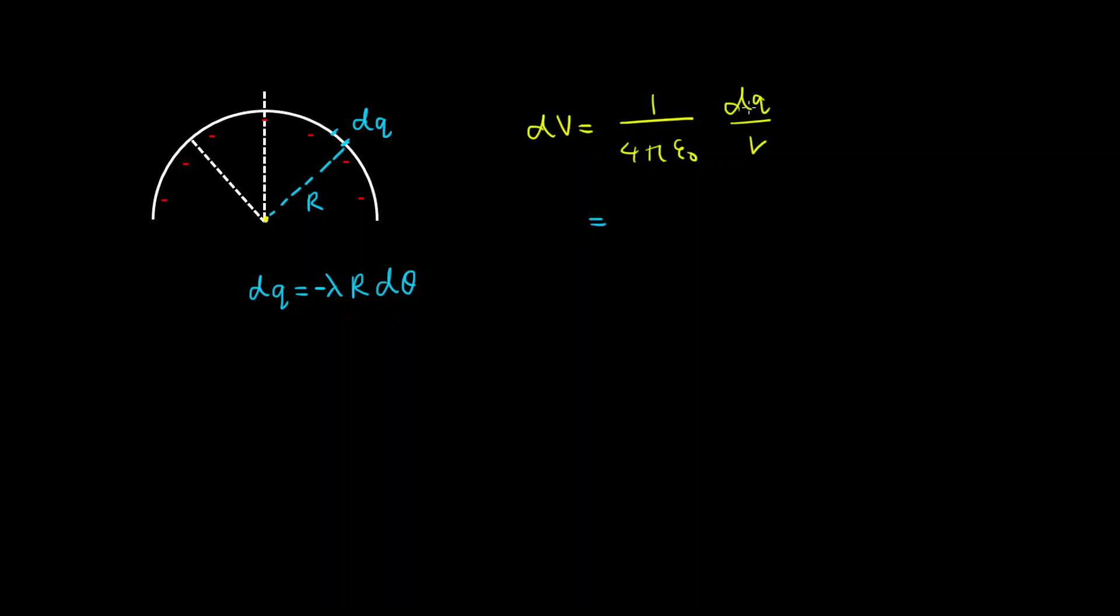And then we can substitute for dq on R so we've got 1 over 4 pi epsilon 0 and a negative lambda R d theta on the radius of the semi-circular arc. And we can cancel R.